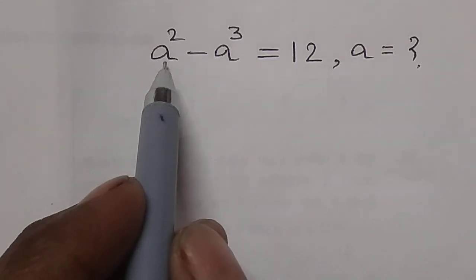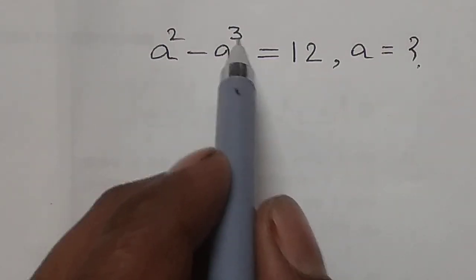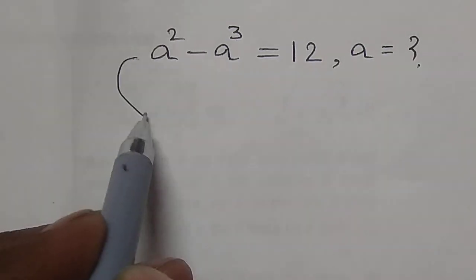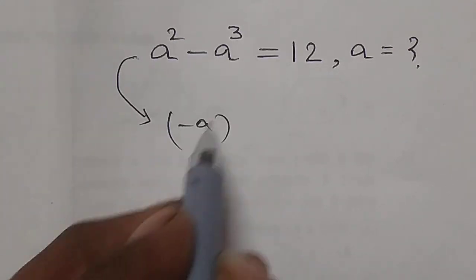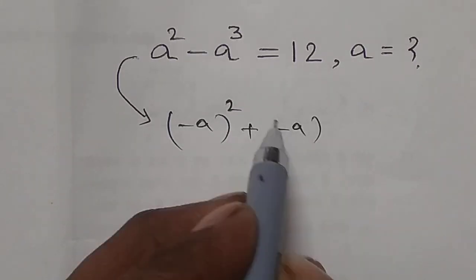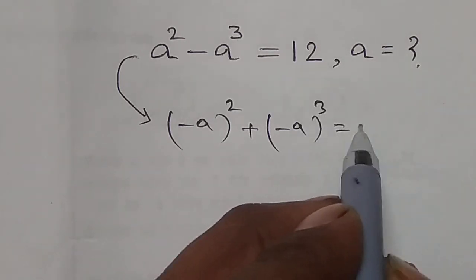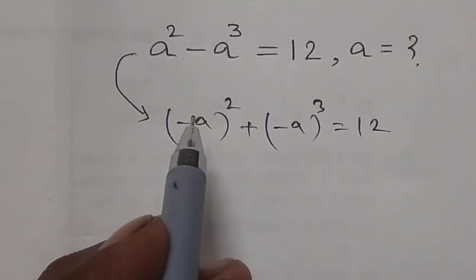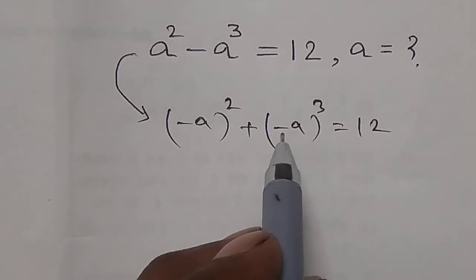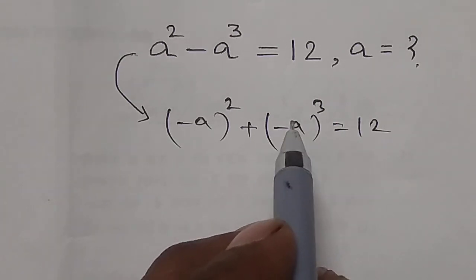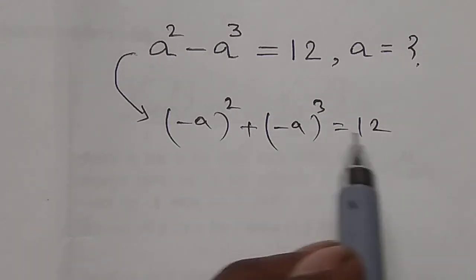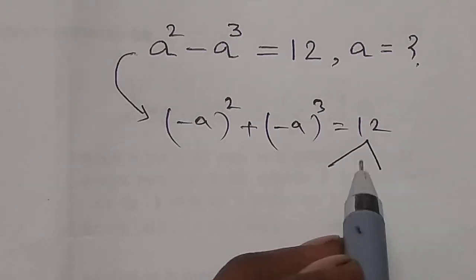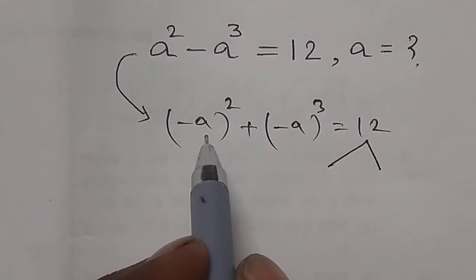The question is: given a² - a³ = 12, find the value of a. We can write this as a² + (-a³) = 12, where a² is a perfect square number and -a³ is a perfect cube number, and their sum is 12. So we split 12 into two numbers whose sum is 12, where one is a perfect square and the other is a perfect cube.